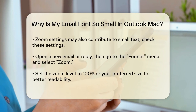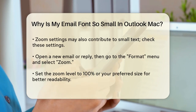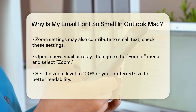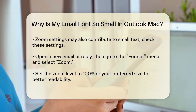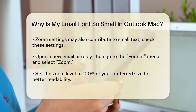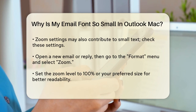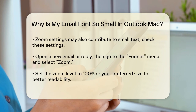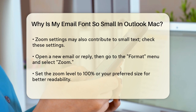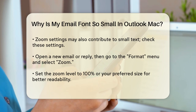Another common issue is with the Zoom settings. Sometimes, the zoom level can be set too low, making the text appear very small. To fix this, open a new email message or reply to an existing one. Go to the Format menu at the top of the screen and select Zoom from the dropdown. Adjust the zoom setting to 100% or your preferred size. This should make the text larger and easier to read.